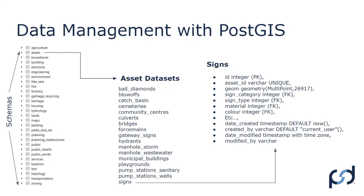We also add some metadata and audit fields to our tables. Date created is entered by default using the NOW() function to store a timestamp with time zone. Created by is a varchar with a default of the current user — so if editing via QGIS, it will capture the username. For date modified and modified by, we use a trigger function: date modified uses the NOW() function and updates automatically on every insert or update, and modified by captures the username of whoever last changed that individual row. This is how we set up tables and database structure for clients.